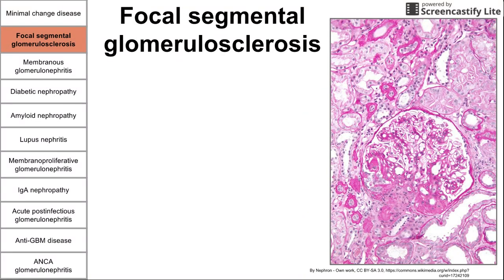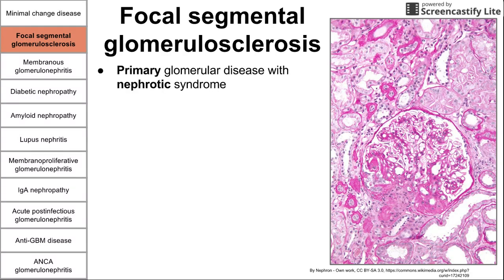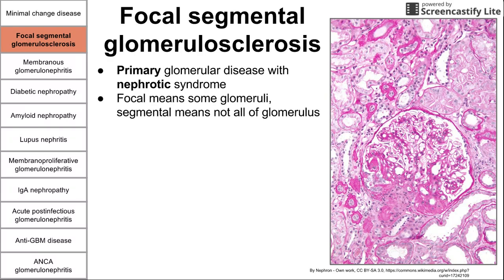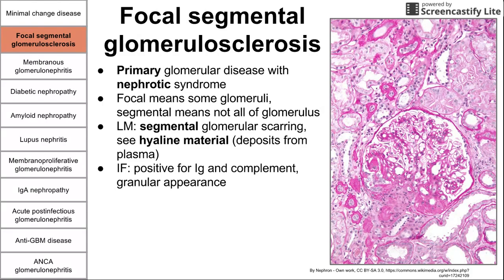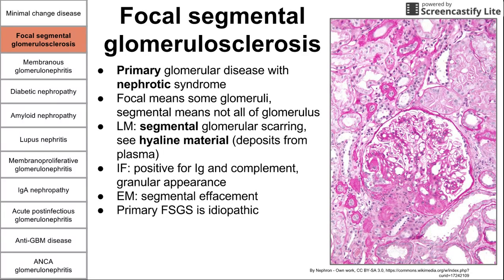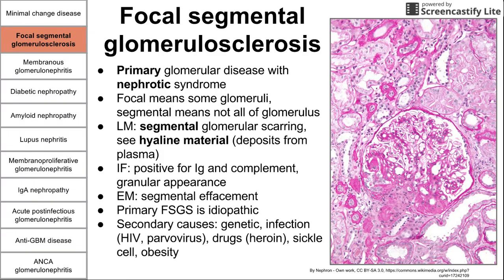Next, we have focal segmental glomerulosclerosis — another primary glomerular disease, also nephrotic. Focal means some glomeruli are affected, not all; segmental means some parts of each glomerulus are sclerotic, not the entire glomerulus, as shown in the histology image. On light microscopy, we see segmental glomerular scarring and some hyaline material — deposits from the plasma. On immunofluorescence, it's positive for immunoglobulins and complement in a granular appearance. EM shows segmental effacement similar to minimal change. Primary FSGS is idiopathic; secondary causes include genetic factors, HIV, heroin, sickle cell, and obesity. Most common in Black patients.